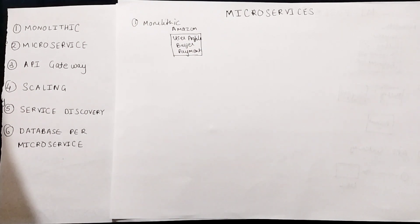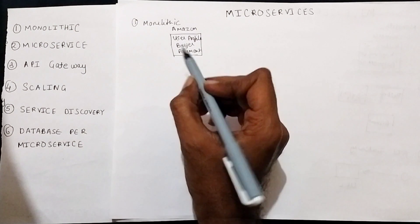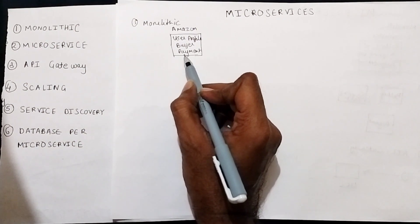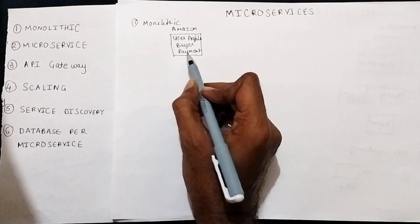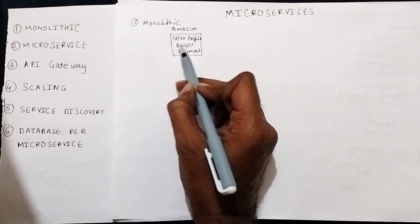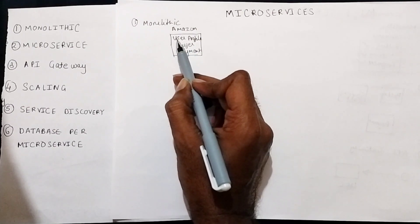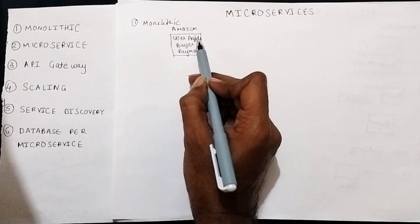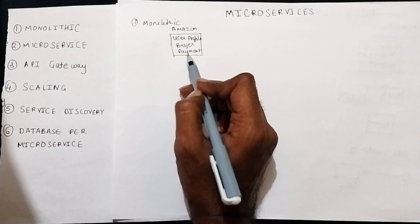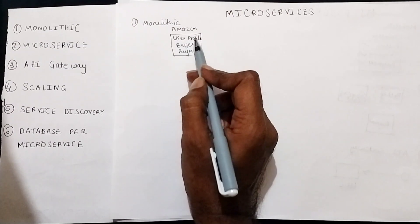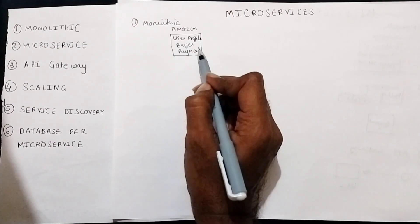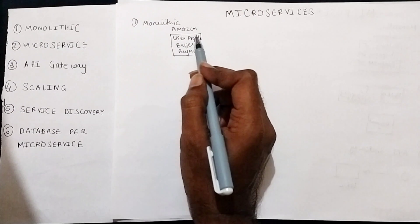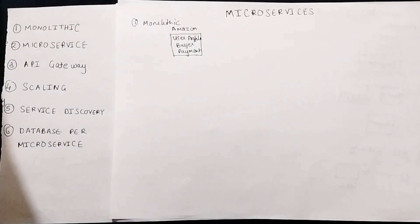Consider an example: if you want to change anything in payments, even if you only make a change in the payment functionality and you did not make any change in buyer functionality or user profile, you still have to build the entire application and deploy the entire application. This is one of the disadvantages of a monolithic application, and that is one of the major reasons why microservices were introduced.